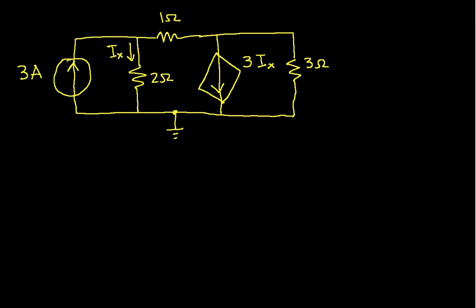Step 2 is to label the node voltages. So I have a node here, and I'll label the voltage at this node V1. And I have a second node here, and I'll label the voltage at this node V2. Two steps done, two steps to go.